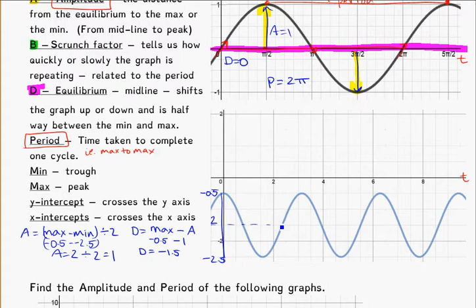And if you take a look, and dot in a line at negative 1.5, you can see that splits it evenly. With a distance of 1 from the midline up to the peak, and a distance of 1 from the midline down to the trough.